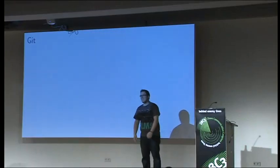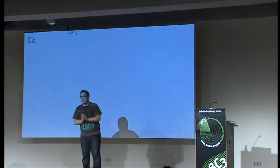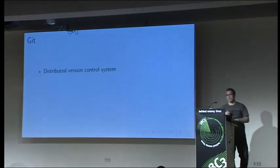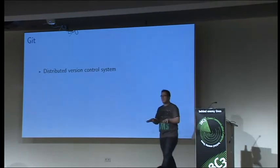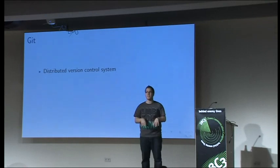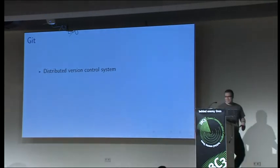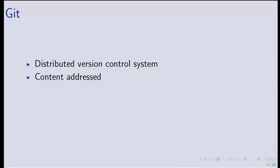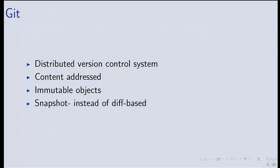Who of you knows Git? Who of you knows the internals of Git? Git is a distributed version control system. It is content-addressed — in Git you have SHA1 hashes and everything is addressed by a SHA1: every content, every commit, everything. Every object is immutable — you save something to Git and it is never changed. And Git is snapshot-based, not diff-based like Subversion, which makes it pretty fast.